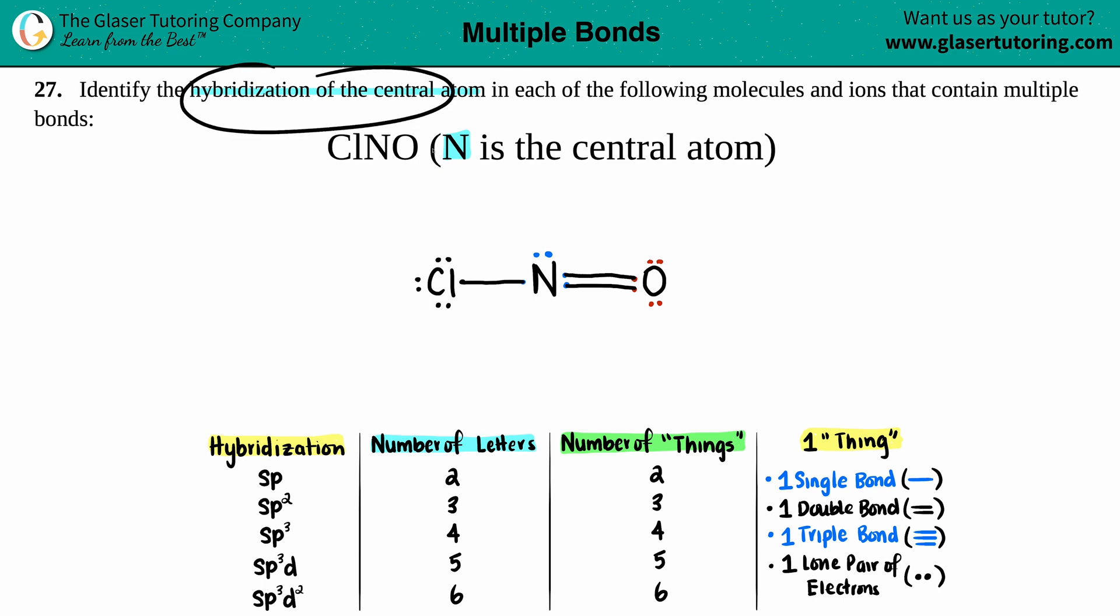Now we just want to find the hybridization of the central atom. The central atom is the nitrogen. When you're finding hybridization, just know that there's a total of five of them.